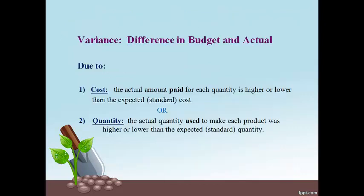The standard and record the variance method records variances directly into the accounting records. The word variance means a difference between the standard estimated amount and the actual amount. The difference in standard and actual cost is caused by one of two things: the cost, or the amount paid for each quantity, was different than expected, or the quantity used was different than expected.